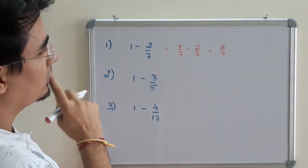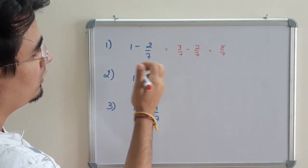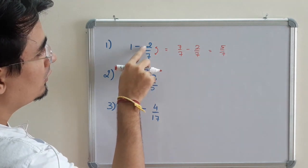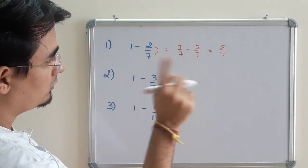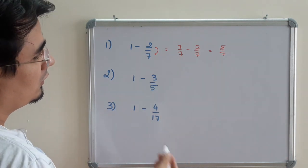So try to understand this thing. If I am subtracting a proper fraction from 1, I am actually subtracting these 2. 7 minus 2 is 5 upon 7. Try to understand, because this will be very handy in coming levels. See here.